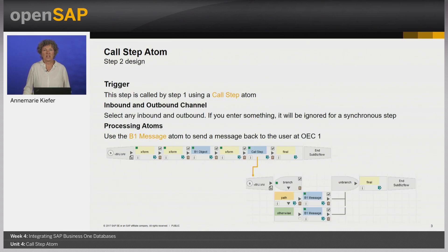Let's look at the overall design for step 2. This step is triggered by the previous step using the call step atom. The second step is run in synchronous mode, meaning that the first step waits for it to complete. When defining a call step in synchronous mode, we can define any inbound and outbound, although the integration framework ignores the definition later. But the model requires that you define at least inbound.